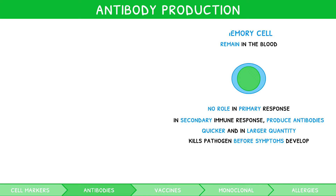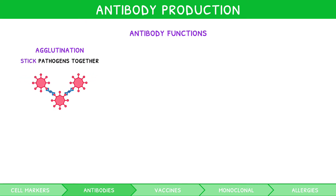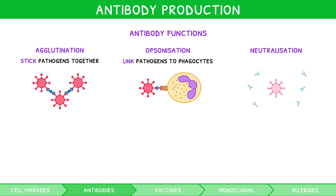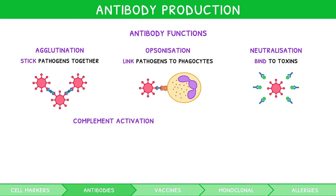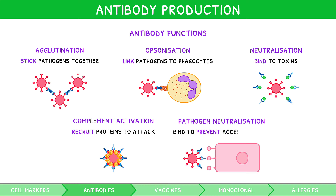But how do antibodies kill pathogens? Well, there are five functions you need to recall, of which most simply increase the innate response of phagocytes. They are: agglutination, where antibodies stick together pathogens to aid phagocytosis; opsonization, where antibodies bind to pathogens and link them to phagocytes; neutralization, where antibodies bind to toxins to minimize their effect; complement activation, where antibodies bind and recruit complement proteins to attack and lyse the cell; and bacteria and virus neutralization, where antibodies bind to prevent access to host cells.